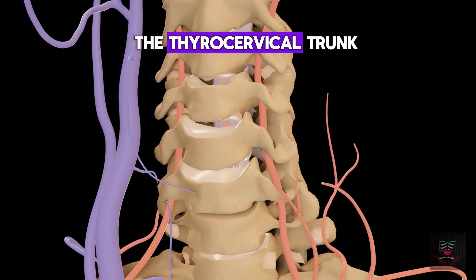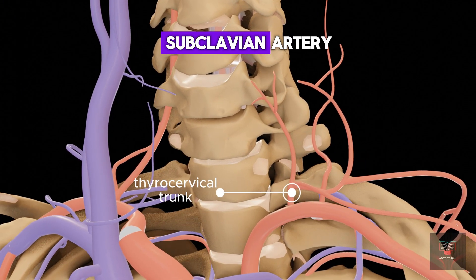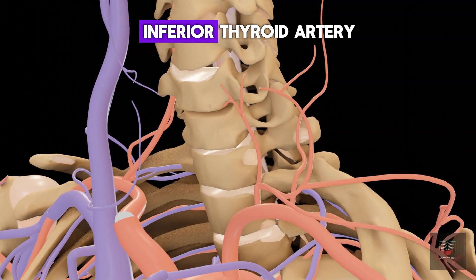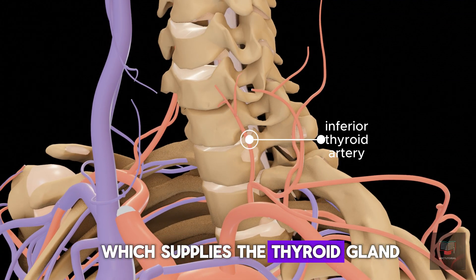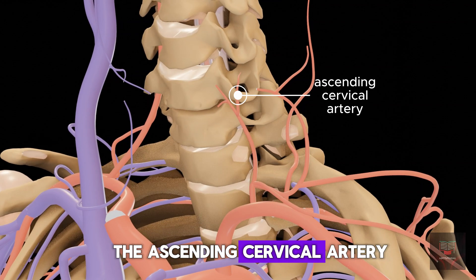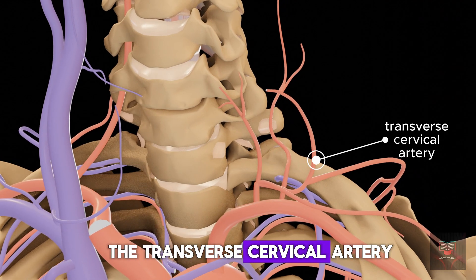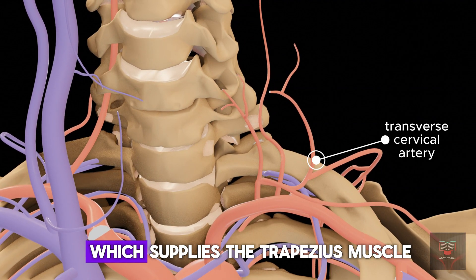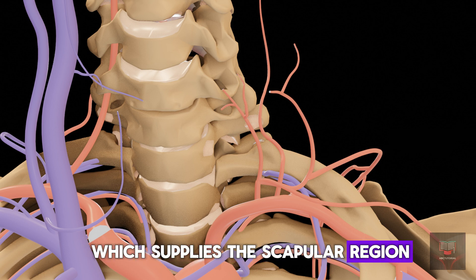The thyrocervical trunk, which arises from the subclavian artery, gives rise to the inferior thyroid artery, which supplies the thyroid gland; the ascending cervical artery, which supplies the cervical muscles; the transverse cervical artery, which supplies the trapezius muscle; and the suprascapular artery, which supplies the scapular region.